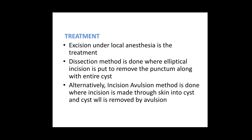Excision is the treatment of choice and is done under local anesthesia. We have two methods. The ideal method is to place an elliptical incision around the punctum overlying the cyst and excise the cyst along with the overlying skin and punctum by dissecting all around it. Alternatively, some place an incision close to the punctum, remove the punctum, open the cyst, and evulse the cyst wall from the surrounding surface — this is called the incision and evulsion technique.